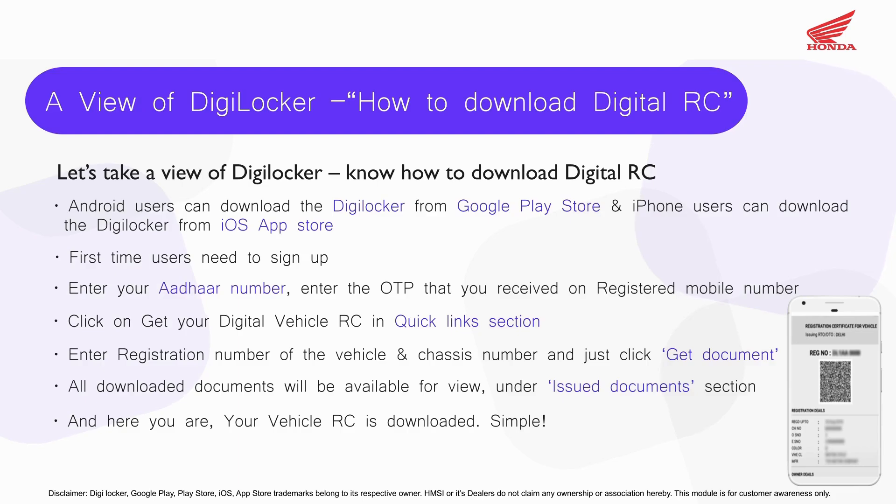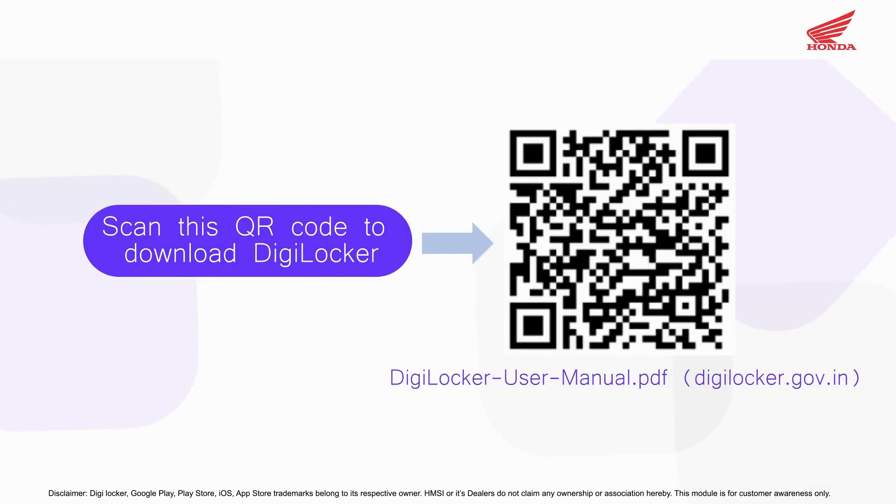All downloaded documents will be available for view under the 'Issued Documents' section — and there you have it, your vehicle RC is downloaded. Simple! You can also download DigiLocker by scanning the QR code shown on your phone.